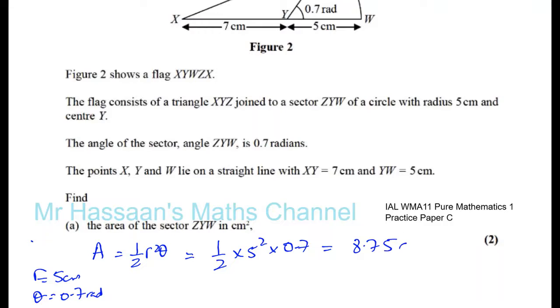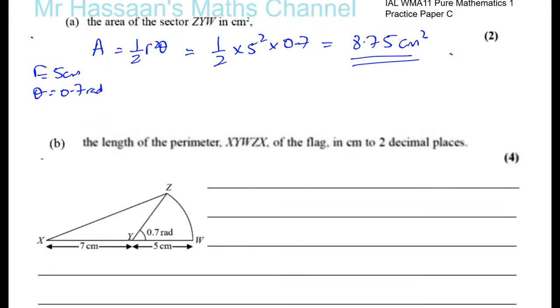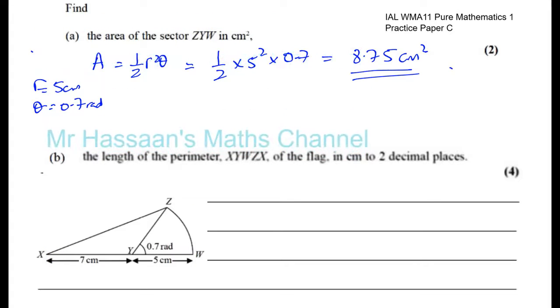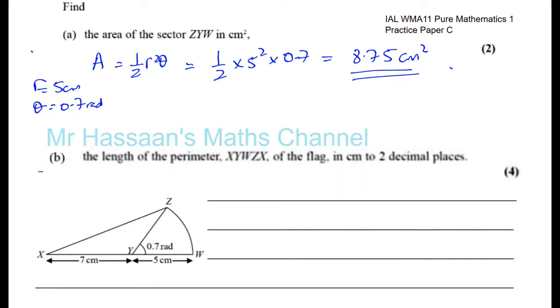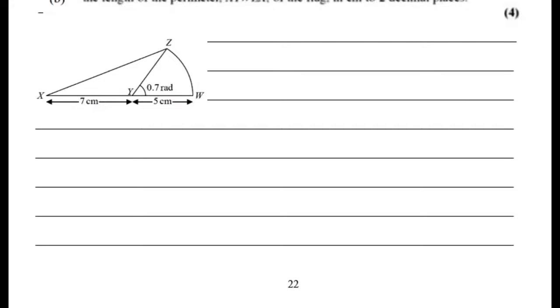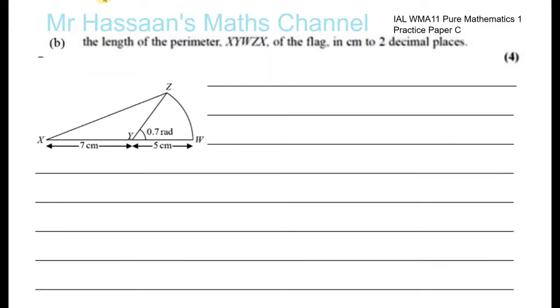Part B tells us to find the length of the perimeter XYWZX - the perimeter of the whole shape. The perimeter is the length of the outline of the shape, so we're going to include XY, YW, WZ, and XZ.